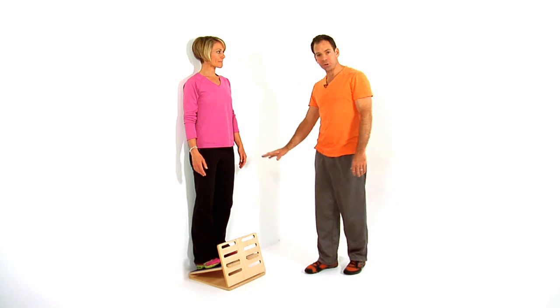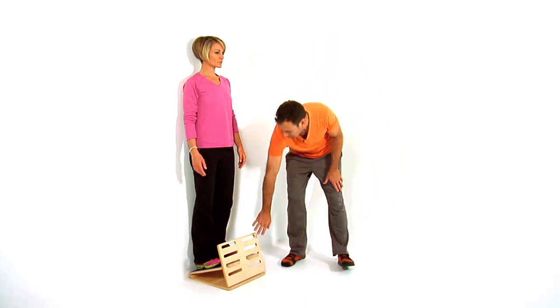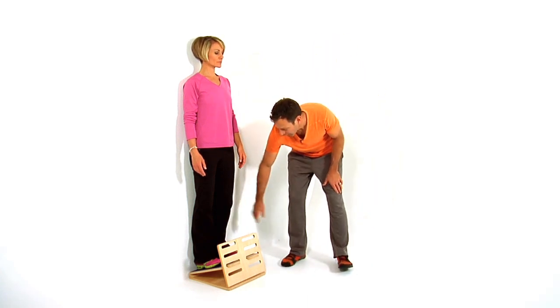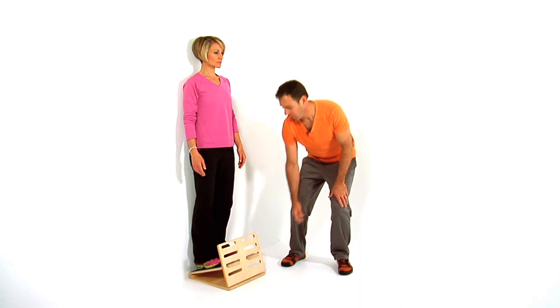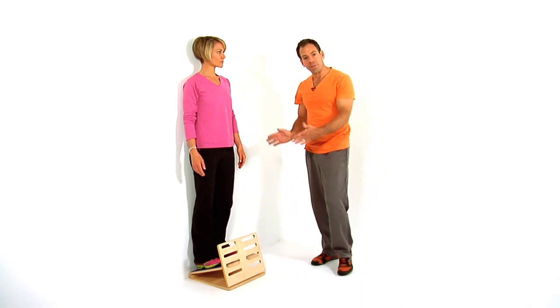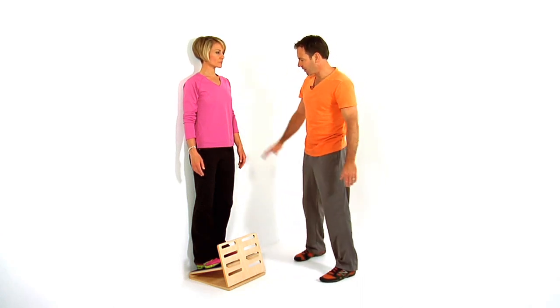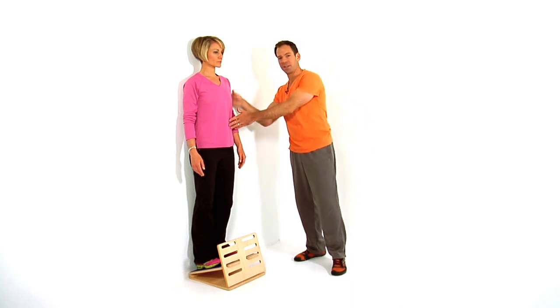Wall drop windmill. In the wall drop windmill position, the slant board is against the wall at an angle that's comfortable for her. Her heels are touching the wall and her feet are hip width apart. In this position, her body's resting against the wall comfortably.